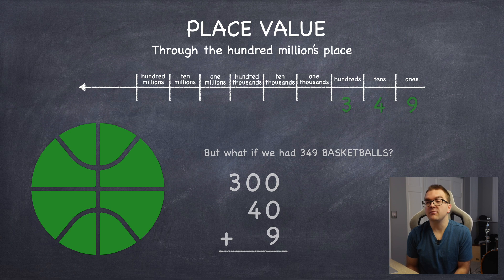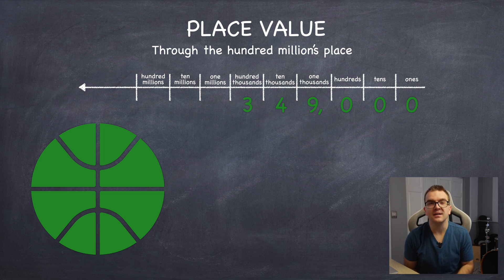Now, if I were to say 349,000, now where does this number go? That's right, 349,000 starts in the thousands section.